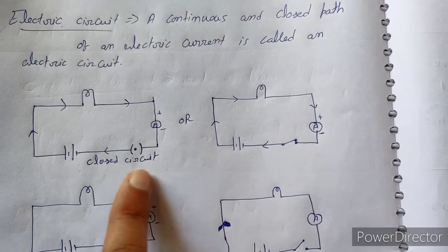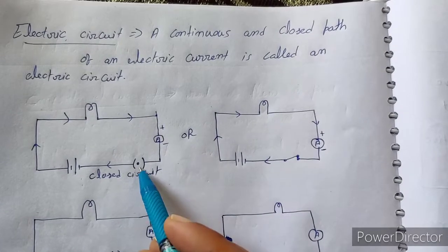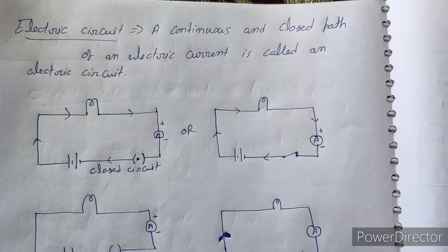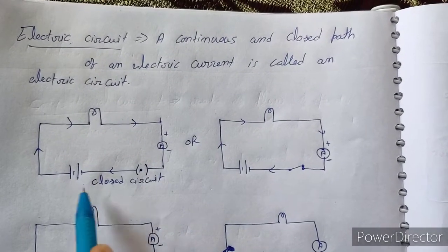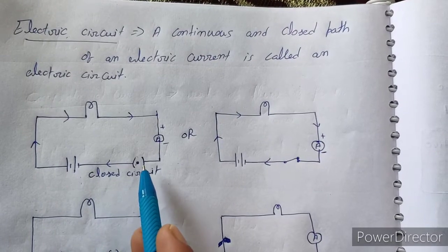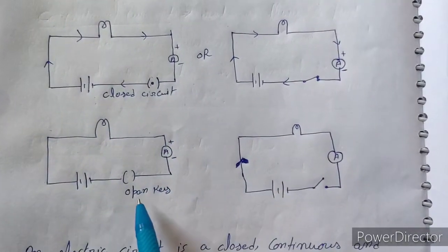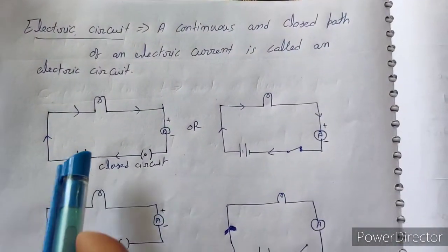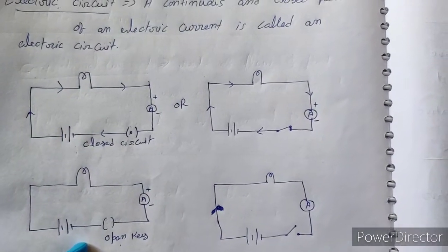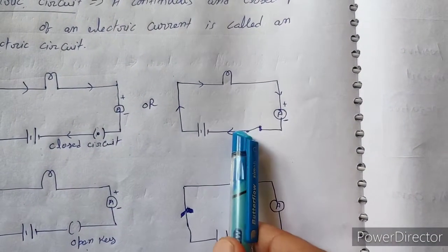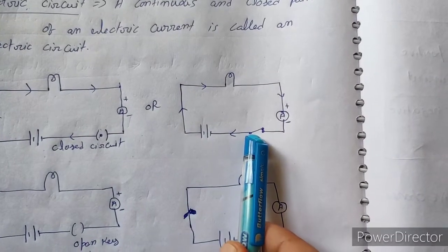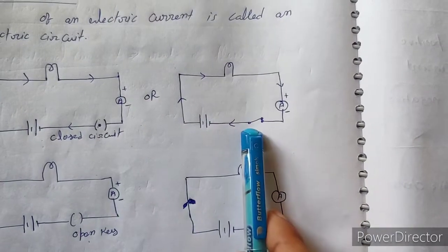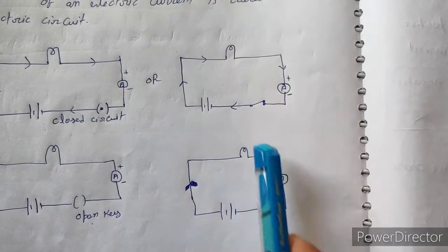This is a closed circuit that I have drawn here — the key is closed, it is switched on, which means current will flow. If the switch is open, current will not flow. This is a closed circuit; this is an open circuit. The switch symbol represents the key. When the switch is closed, it is on; when the switch is open, it is off.